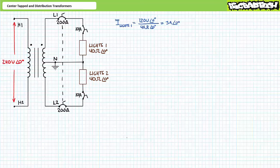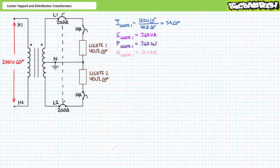An application of Ohm's law solving for current demonstrates the first lighting load draws 3 amps at an angle of 0 degrees. A subsequent application of the AC power formula demonstrates the first lighting load consumes 360 volt amperes of apparent power, of which 360 watts is directed towards real power and zero vars is directed towards a reactive interchange.